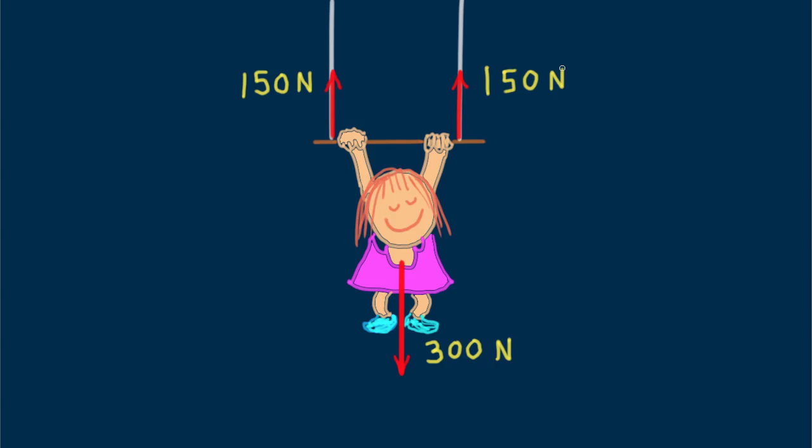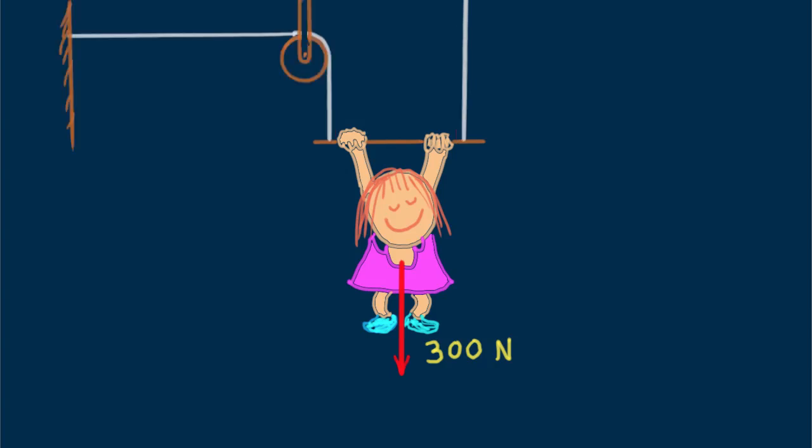Suppose instead of attaching the rope to the ceiling, we fix the end to a wall with this pulley arrangement. The pulley simply changes the direction of the rope, not its tension. So how about tension on the right rope? It will still be 150 Newtons.